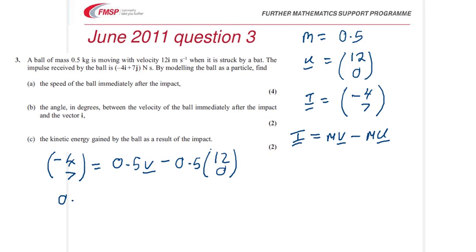Rearranging that, we get 0.5V equals 2, 7. You might like to check that yourselves. So V equals 4, 14.